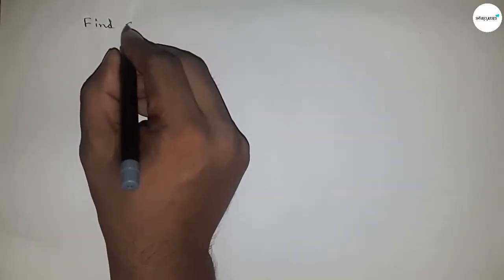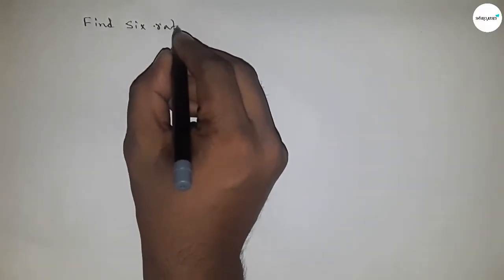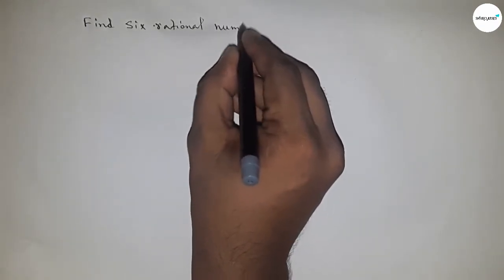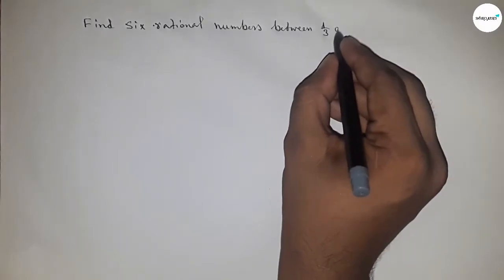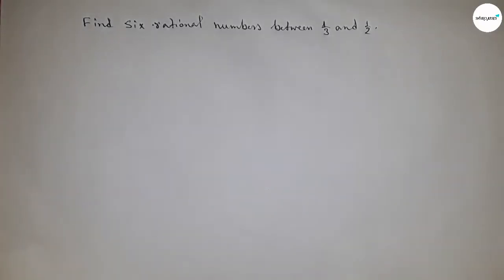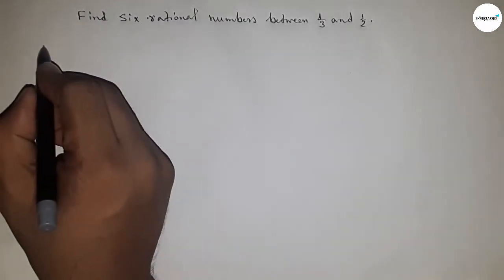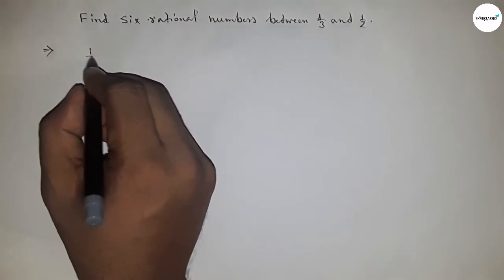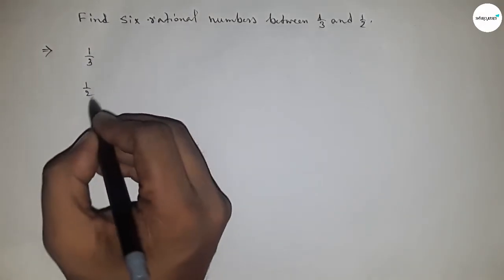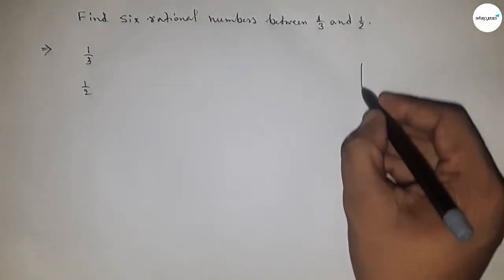Hi everyone, welcome to Assessor Classes. Today we have to find 6 rational numbers between 1/3 and 1/2. First of all, write down the given rational numbers: 1/3 and 1/2.